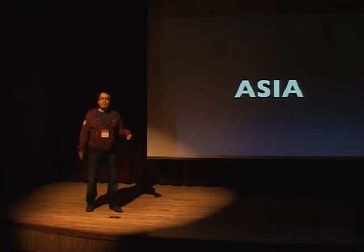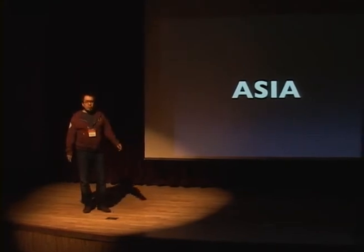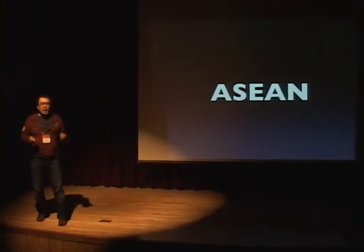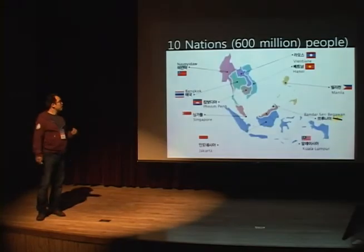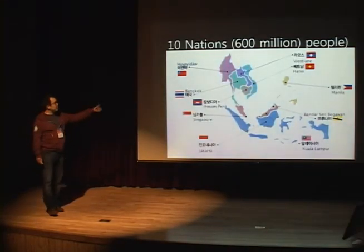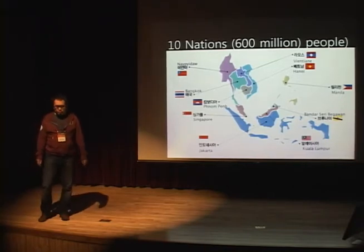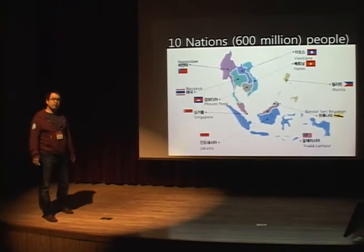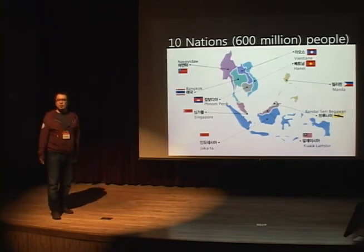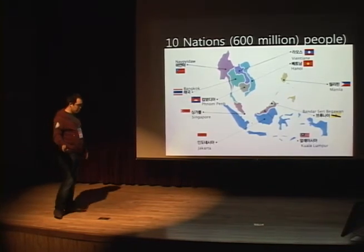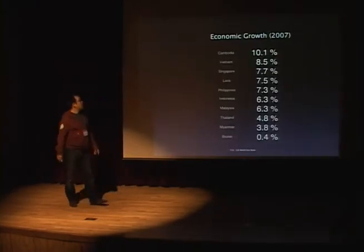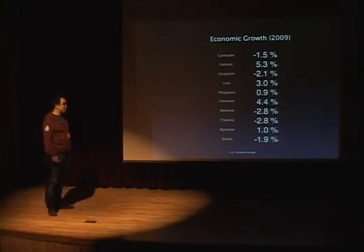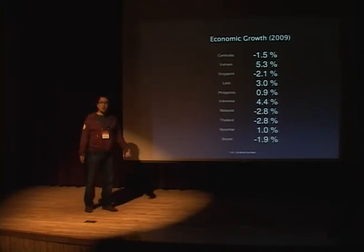Most of it will happen in Asia — a lot in China and India. My worry is that a lot will happen in ASEAN countries: these 10 countries with 600 million people, but they are very poor, except for Singapore and Brunei. You all saw Slumdog Millionaire — everything is going to become a slum if we don't do this right. The economic growth rate in 2007 was high in this area, but during the financial crisis everything went wrong. It's very vulnerable.